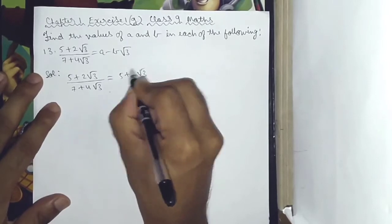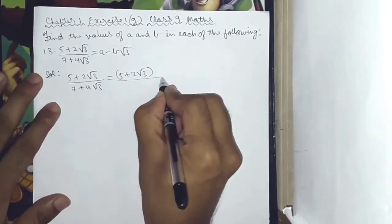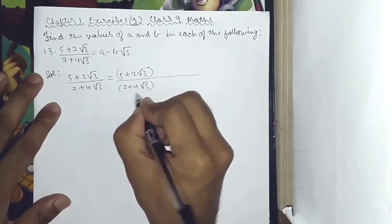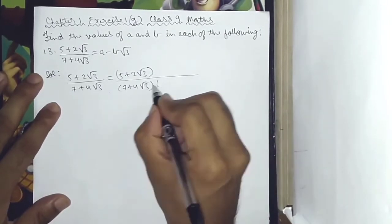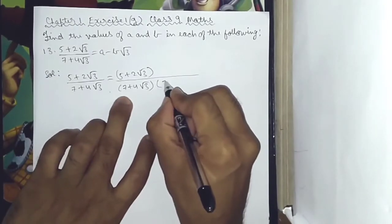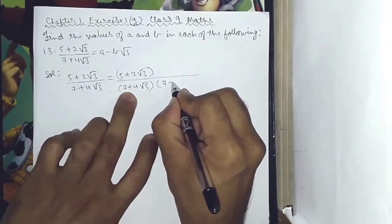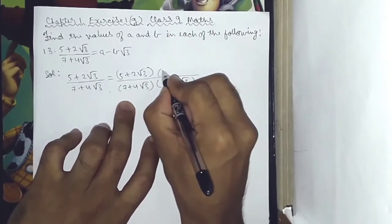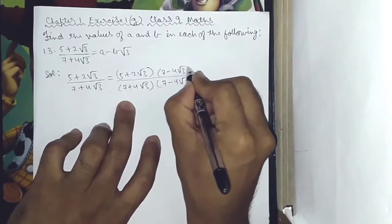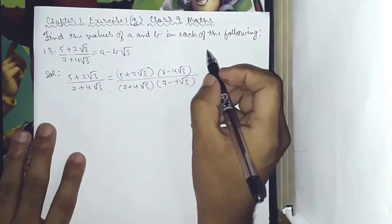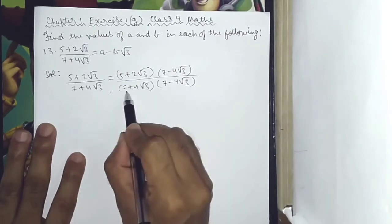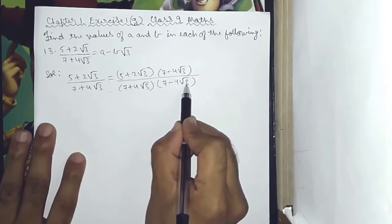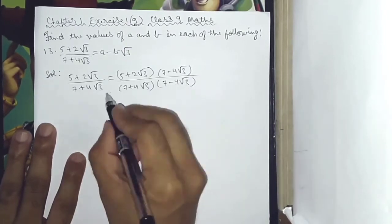So, 5 plus 2 root 3 divided by 7 plus 4 root 3, multiply by 7 minus 4 root 3 over 7 minus 4 root 3. The denominator is rationalized in order to proceed.